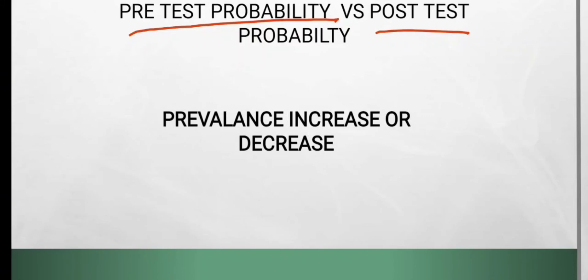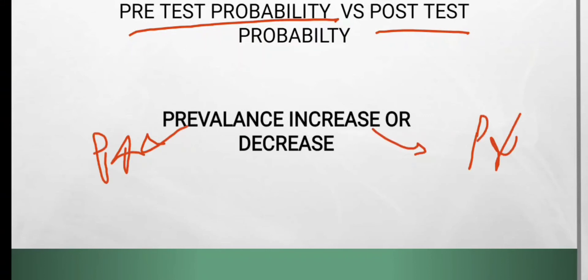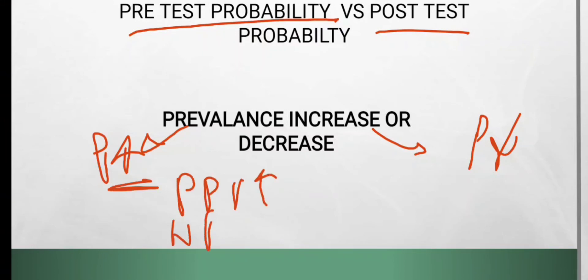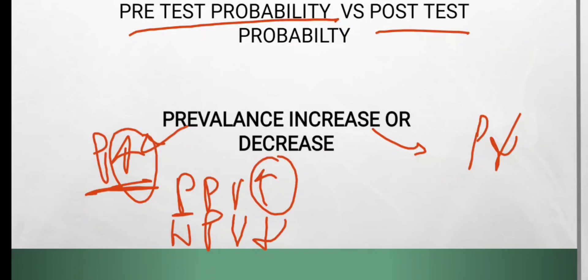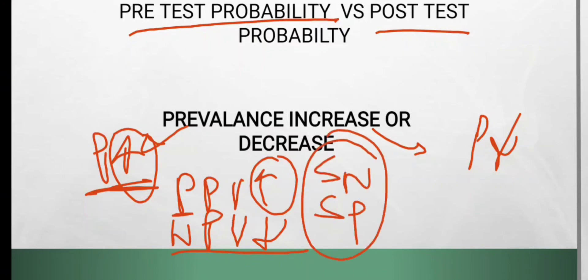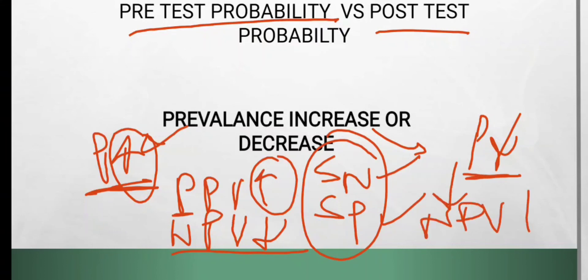One common question: what happens if prevalence increases or decreases? If prevalence increases, positive predictive value will increase and negative predictive value will decrease — P goes with P. But sensitivity and specificity remain constant. If prevalence decreases, sensitivity and specificity remain constant, but positive predictive value decreases and negative predictive value increases.